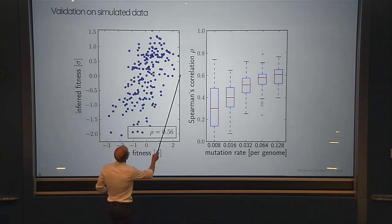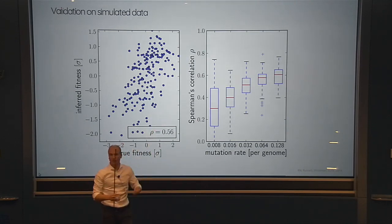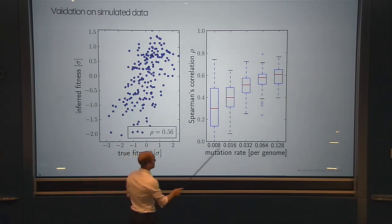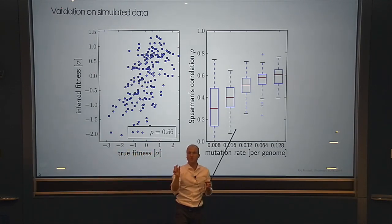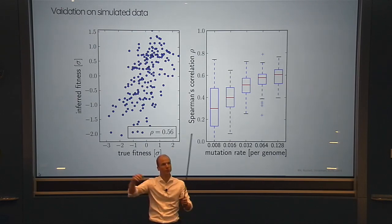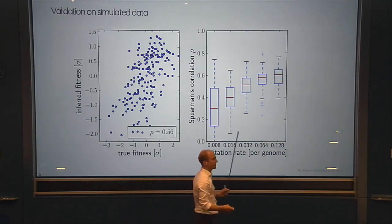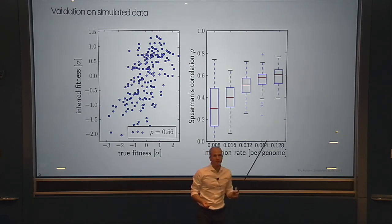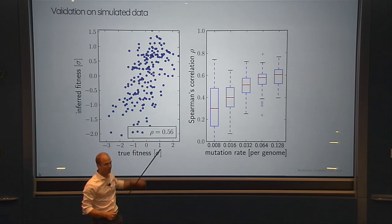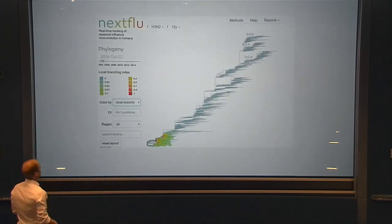This inference gets better when fitness changes come from many small mutation steps rather than a few big ones — harder to predict earthquakes than the weather. There are other validations we did. The real question is: does it work for flu?